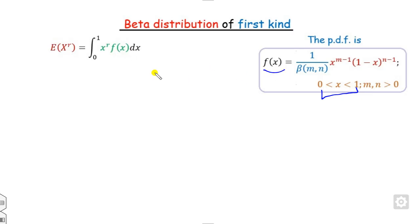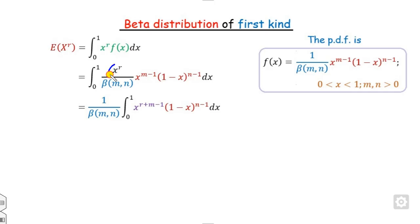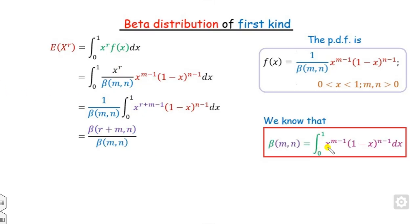We substitute the value of f(x) into the expression. The constant part can be taken outside the integration, and x^r and x^(m-1) can be clubbed together. When integrating from 0 to 1, this form is always a beta function. Comparing terms, the exponent m here is r+m, and n remains n.